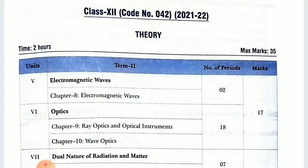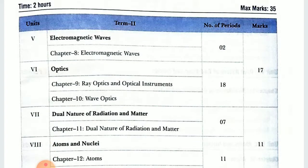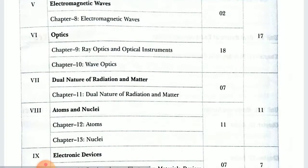This is chapter number 8, Electromagnetic Waves, and Optics — Ray Optics and Optical Instruments and Wave Optics. Combinedly all these 3 chapters, that means chapter number 8, 9, 10 — are worth 17 marks.